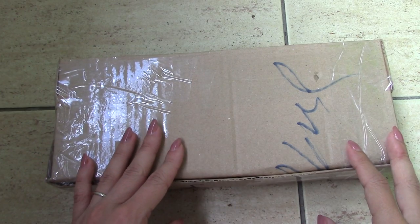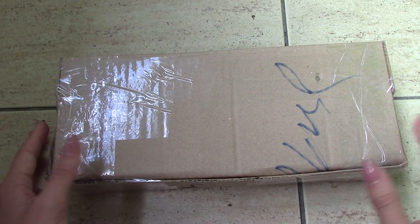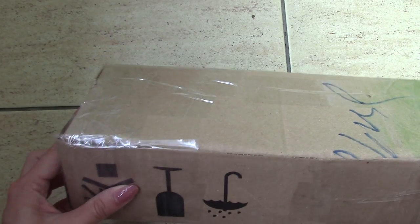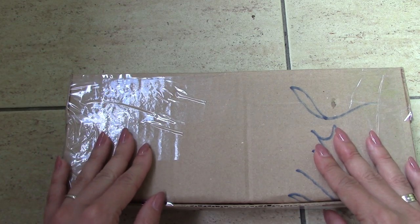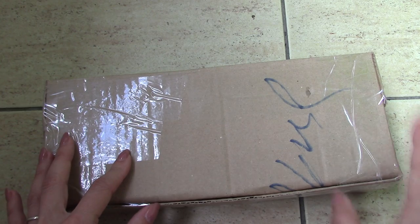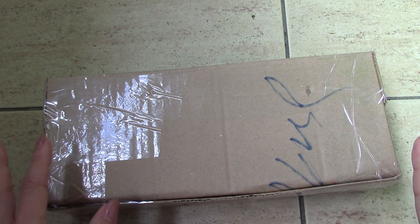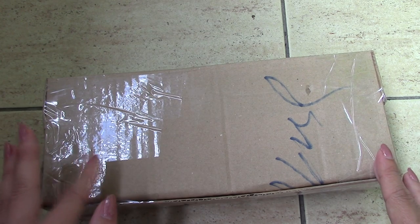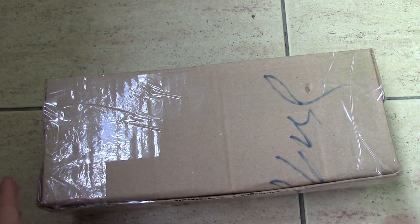So guys, as you can see, I made my wrapping out of camera. It looks like this. Everything is fine and my package will be safe in it. Now the next step, I will put the address somewhere here. Of course I will do it out of camera because it's a private address. And yeah.